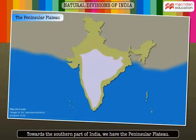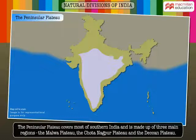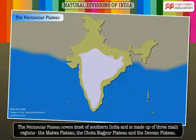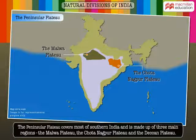Towards the southern part of India, we have the Peninsular Plateau. It covers most of southern peninsular India and is made up of three main regions: the Malwa Plateau, the Chodha Nagpur Plateau, and the Deccan Plateau.